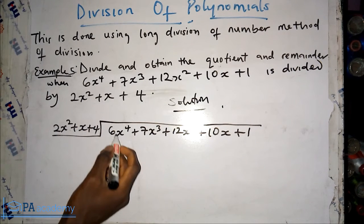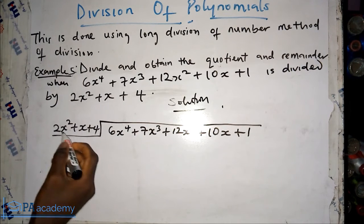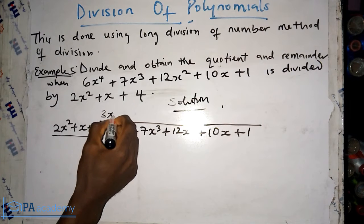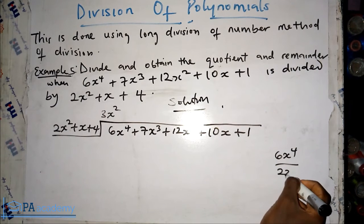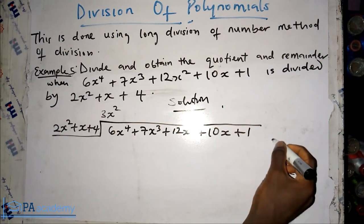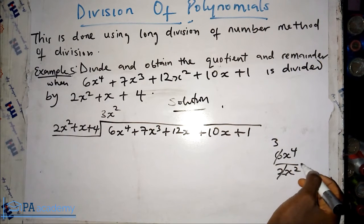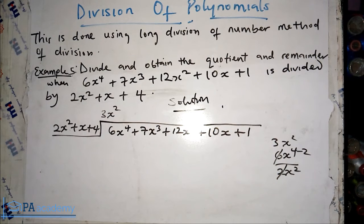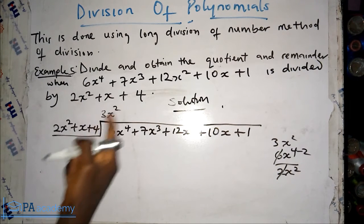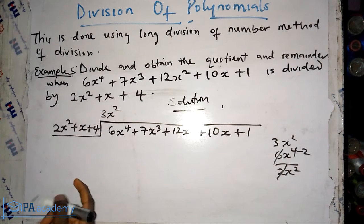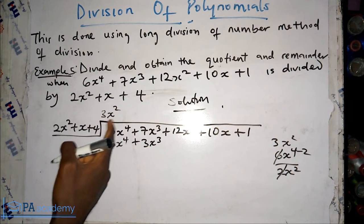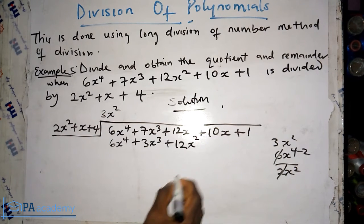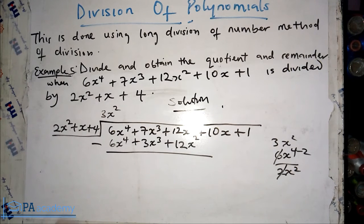We start by dividing the leading terms: 6x⁴ divided by 2x² gives us 3x². You can write it out: 6x⁴ divided by 2x² — 6 divided by 2 is 3, and x⁴ divided by x² gives x². So we have 3x² in the quotient. Multiplying: 3x² times 2x² gives 6x⁴, 3x² times x gives plus 3x³, and 3x² times 4 gives plus 12x².